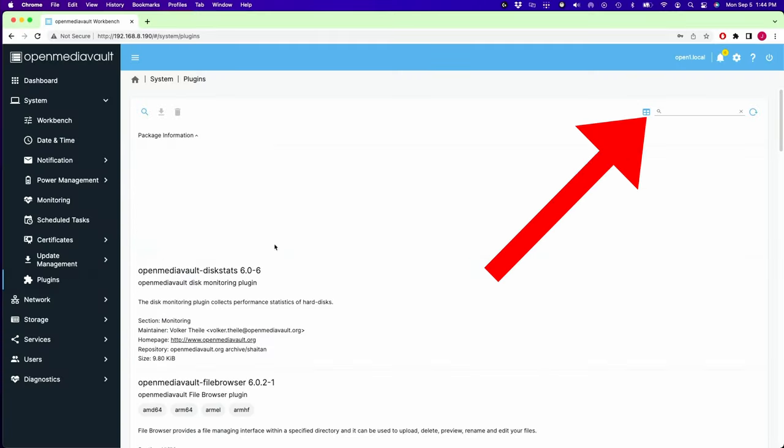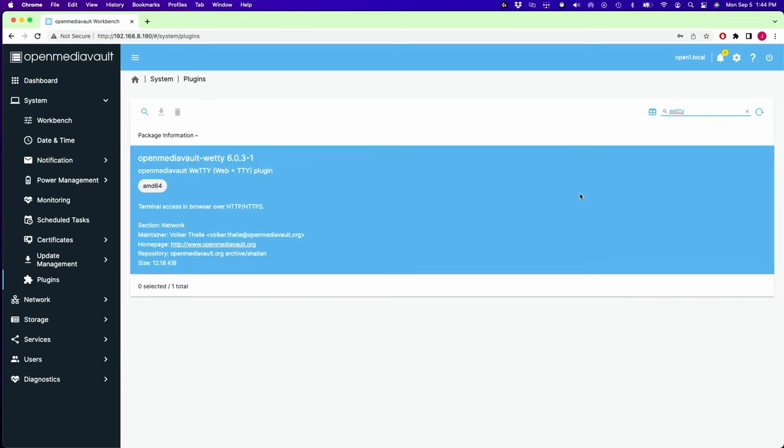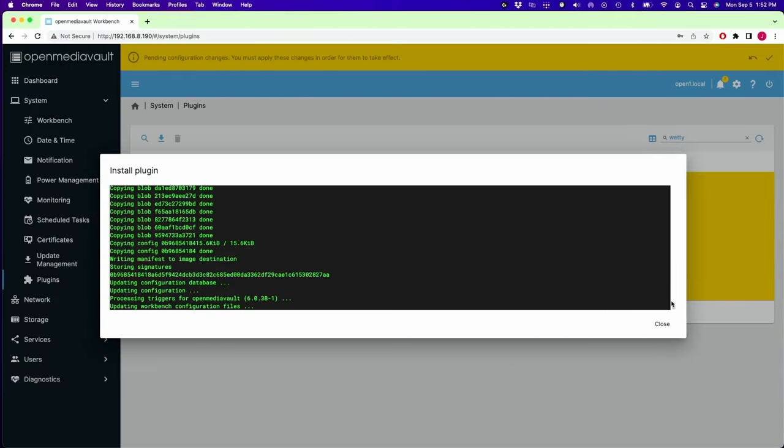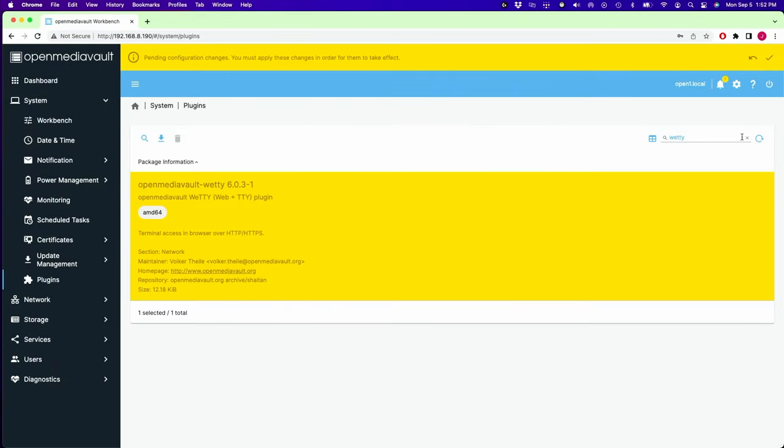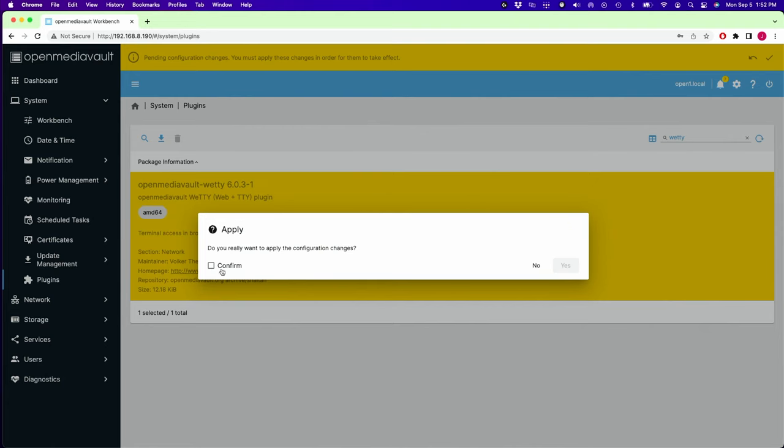So next are plugins. And so basically, there's a whole bunch of plugins where you can add extra features to OpenMediaVault. So what we're going to do is install one plugin, and then we're going to install OMV Extras to include all the community created plugins. So we click on plugins. We're going to go over to search, click on that, type in Wetty. So what this does is it gives us terminal access from a browser window. And then we click close, and then the check mark, and then confirm.